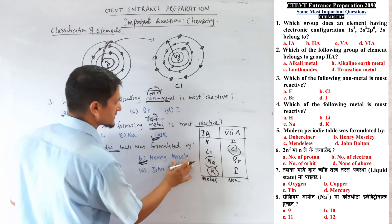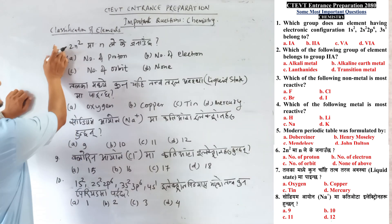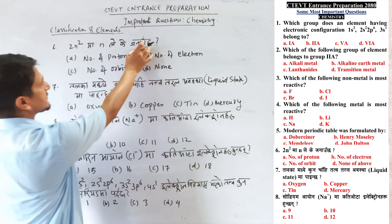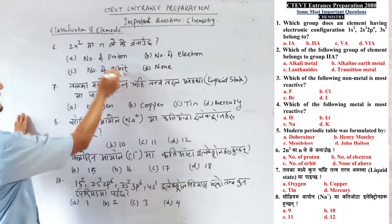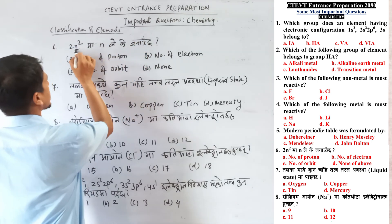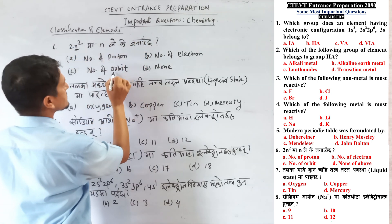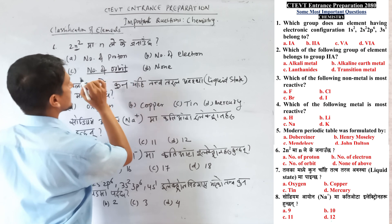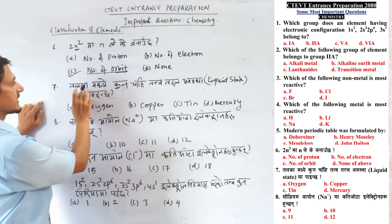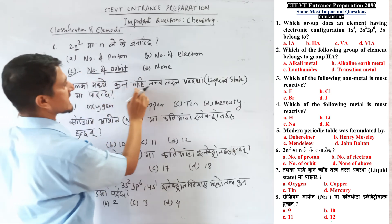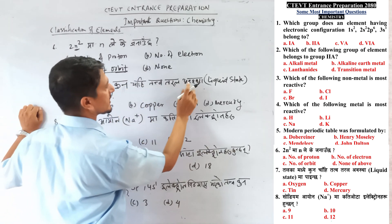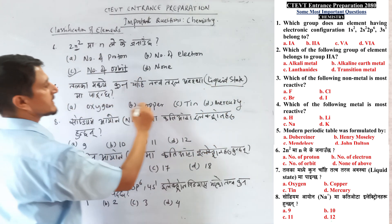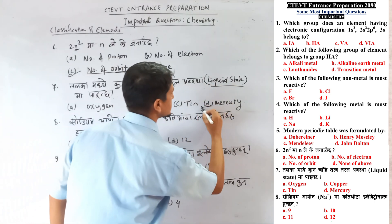Question number 6: The 2N² formula is used to find the number of electrons in each orbit/shell — where N is the shell number. Question number 7: Which element exists in liquid state? Mercury is the correct answer.